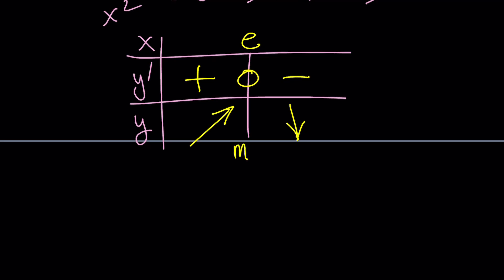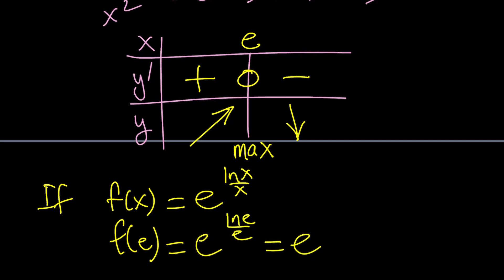So we have a max at x equals e, and the maximum value is given by f at e. So if f of x is e to the power ln x over x, that f of e would be e to the power ln e over e, which is e to the power 1 over e, because ln e is, as you know, equal to 1.